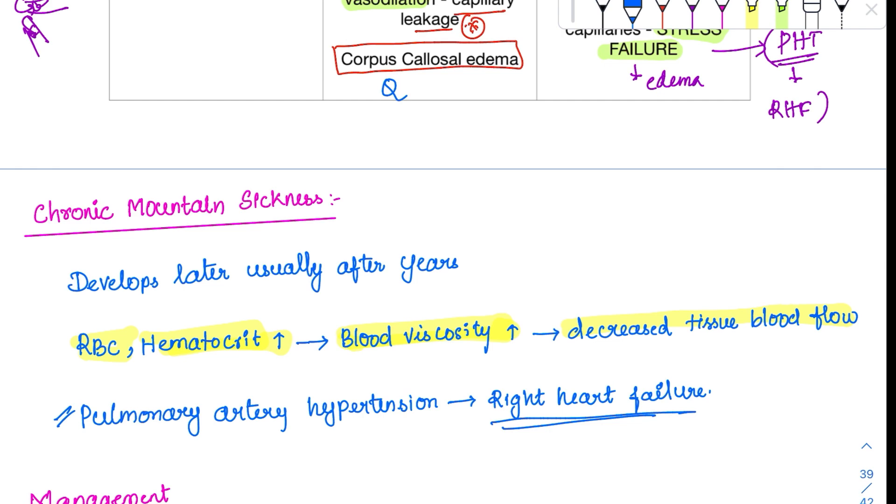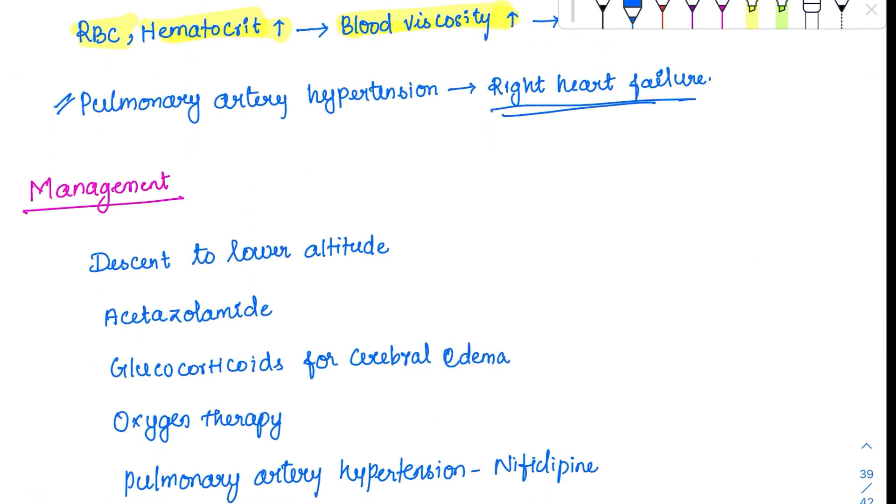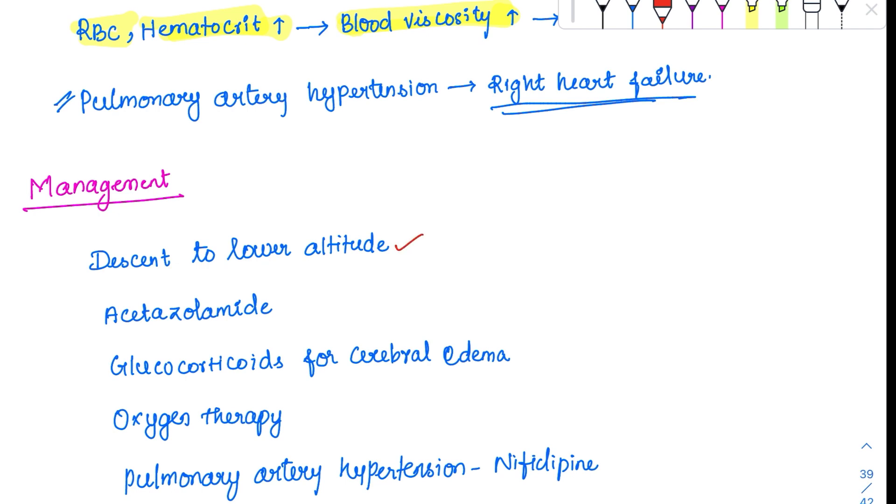For management, the first and simplest is descent to lower altitude. Precautionarily, acetazolamide can be taken - a carbonic anhydrase inhibitor. When inhibited, it conserves H+, creating acidosis, giving impulses to respiratory stimulus, increasing respiration. If there's edema, cerebral or pulmonary, treatment is glucocorticoids. Finally, oxygen therapy can be given. Nifedipine has been proven essential for pulmonary artery hypertension.